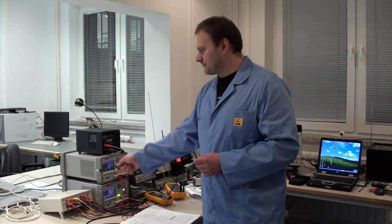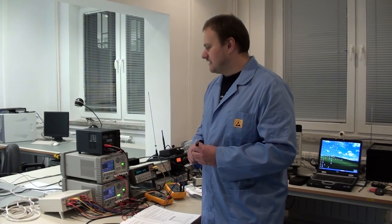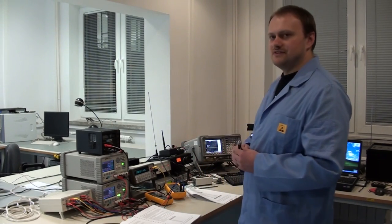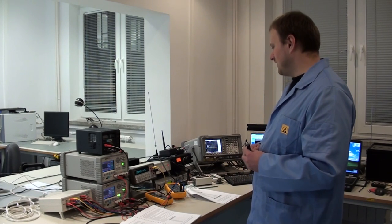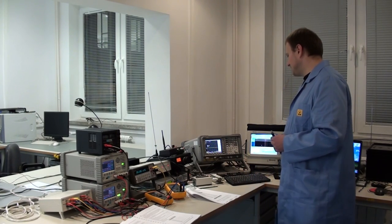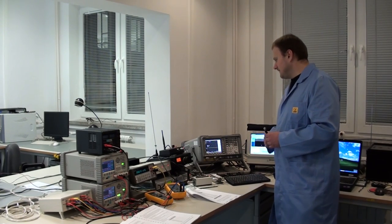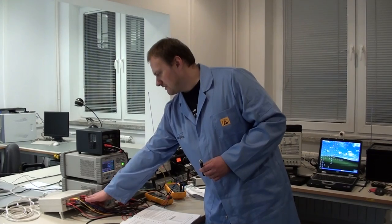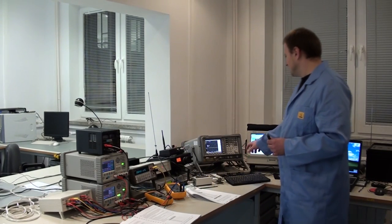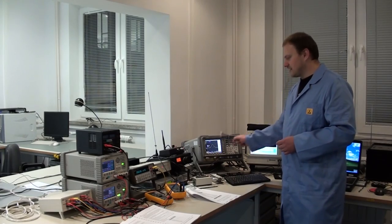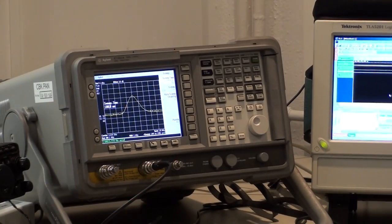Następnie taka konfiguracja trafi przez przewód do nadajnika i z nadajnika sygnał może być odebrany na analizatorze widma. W tej chwili na analizatorze widma widzimy, że sygnału nie ma, jeszcze jest nadawanie nie włączone. Natomiast kiedy włączymy nadawanie sygnału, to tutaj możemy zaobserwować taką górkę, która jest widmem tego sygnału nadawanego przez satelitę.